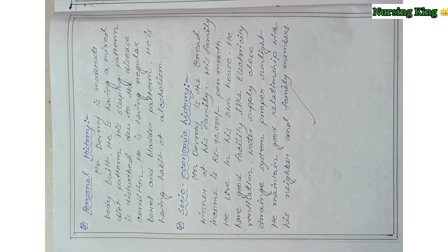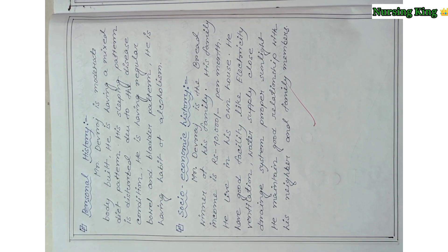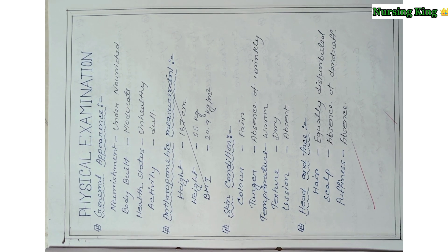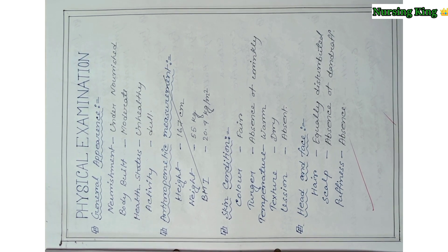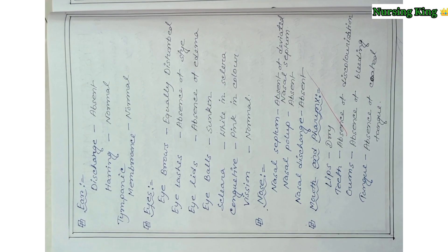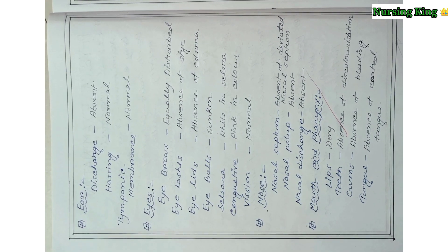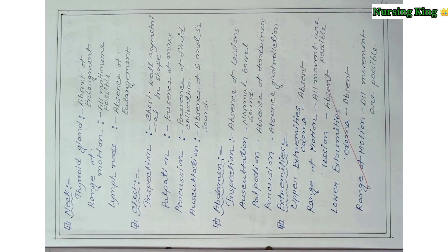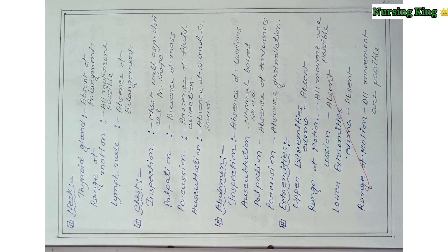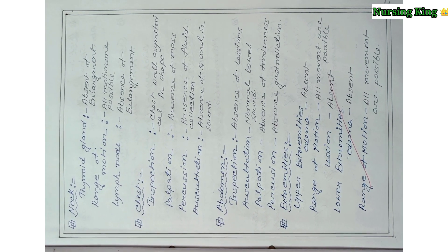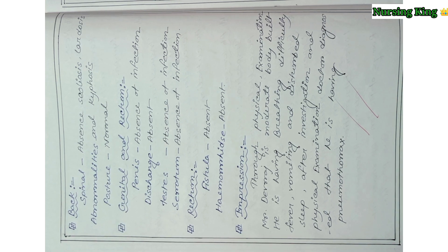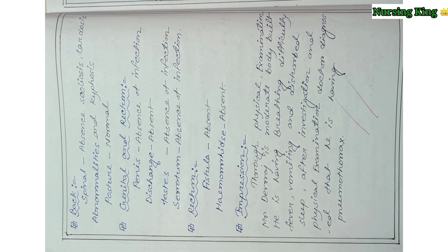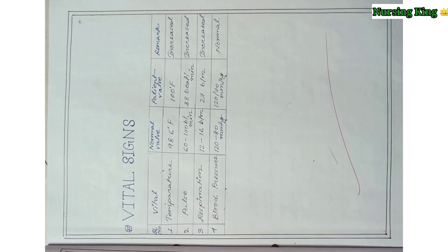Then personal history and socioeconomic history. After that, you have to mention the physical examination. Depending on the condition, you have to examine the patient head to toe — examining where it is abnormal. You have to mention wherever abnormality is present.